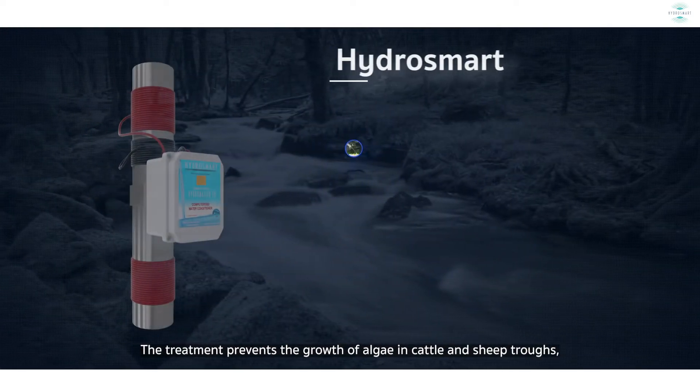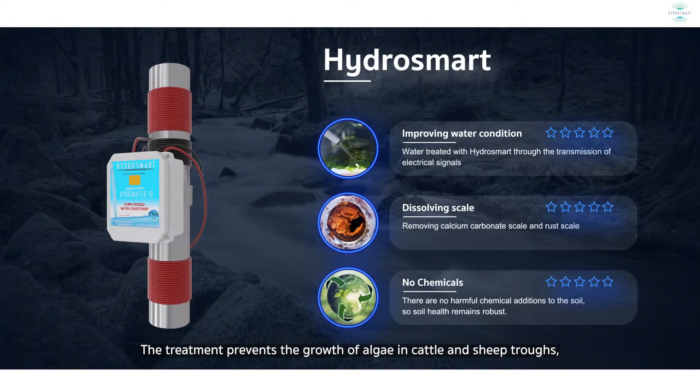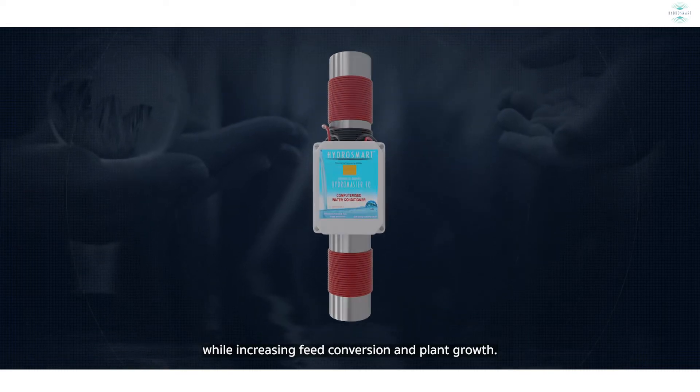The treatment prevents the growth of algae in cattle and sheep troughs, while increasing feed conversion and plant growth.